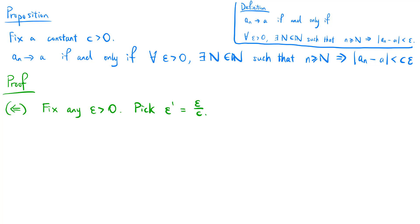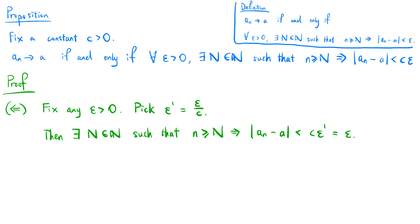For the if part, if we fix any epsilon greater than zero, we can pick epsilon prime which equals epsilon divided by c, which is still positive. Then there exists a natural number N such that little n greater than or equal to N implies that the absolute value of an minus a is less than c times epsilon prime, which is by definition epsilon. So the definition of a convergent sequence is satisfied.